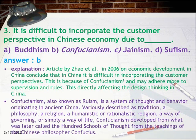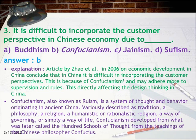Question 3: It is difficult to incorporate the customer perspective in the Chinese economy due to which factor? Answer: B, Confucianism. Explanation: An article by Zhao et al. (2006) on economic development in China concludes that incorporating customer perspectives is difficult because of Confucianism, which leads to adherence to supervision and rules. Confucianism, also known as Ruism, is a system of thought and behavior originating in ancient China, developed from the teachings of the philosopher Confucius.